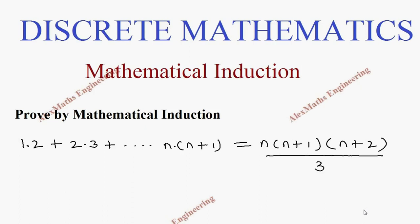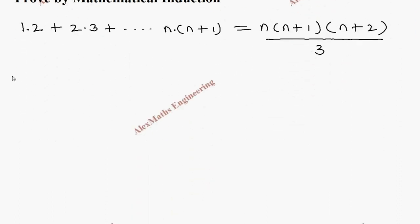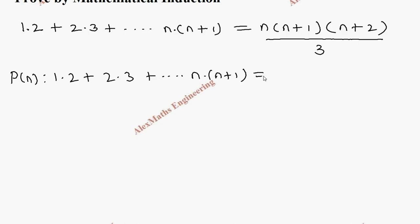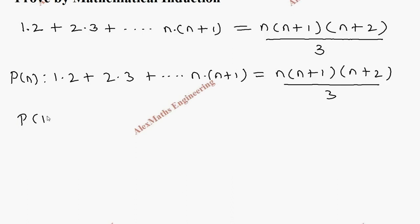Hi students, this is Alex. In this video we are going to prove by mathematical induction: 1·2 + 2·3 + ... + n(n+1) = n(n+1)(n+2) / 3. Let's take this as P(n), that is 1·2 + 2·3 + ... + n(n+1) on the left, and n(n+1)(n+2) / 3 on the right. We are going to start by taking P(1).